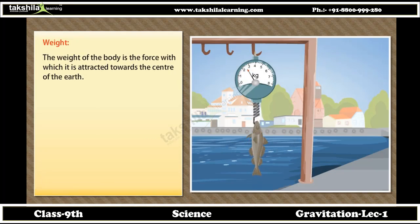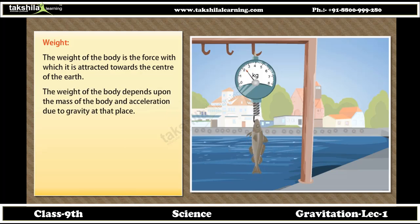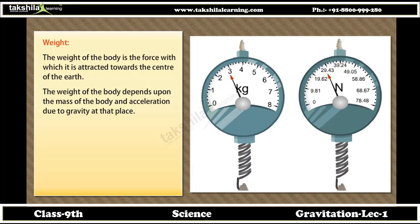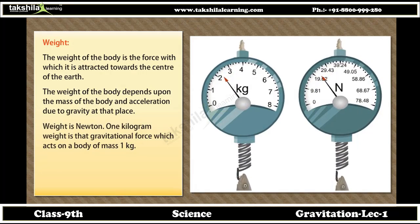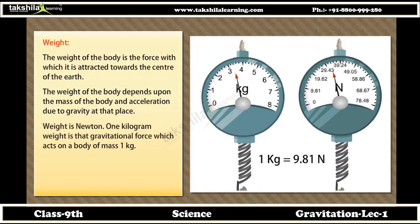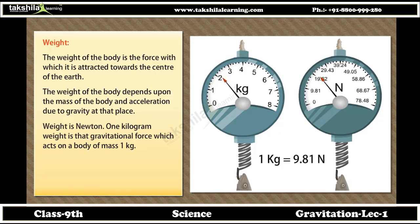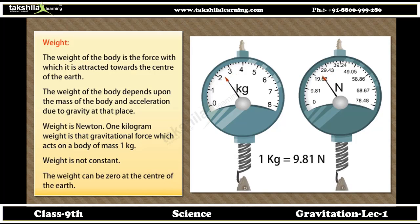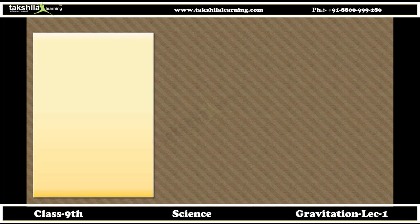Weight: the weight of the body is the force with which it is attracted towards the center of the earth. The weight of the body depends upon the mass of the body and acceleration due to gravity at that place. One kilogram weight is that gravitational force which acts on a body of mass one kilogram. Weight is not constant; the weight can be zero at the center of the earth.